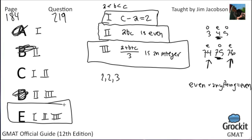We got through question 219. Next time we'll pick up with question 220 on page 184. It looks like we'll finish problem solving next time — 11 problems remaining — and then move on to data sufficiency. I'll see you then.